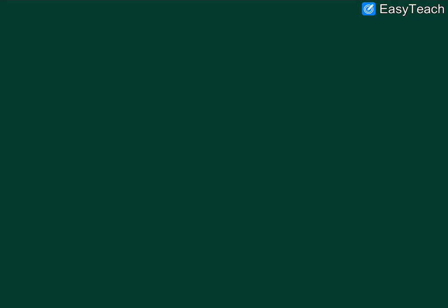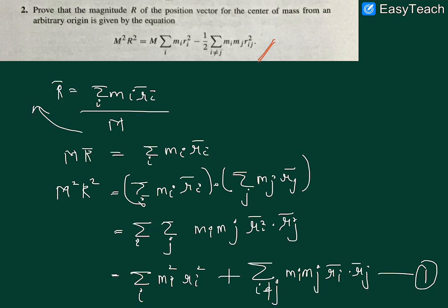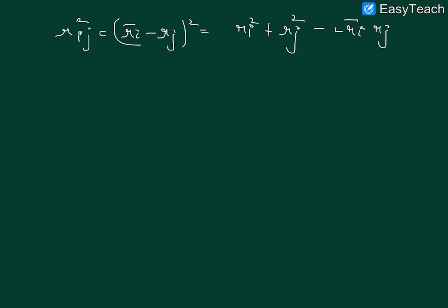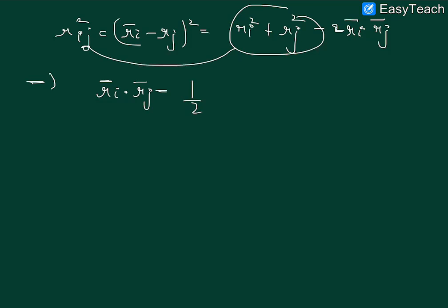By the definition of R_ij, we have R_ij² = (r_i − r_j)², which expands to r_i² + r_j² − 2 r_i · r_j. Rearranging, the dot product r_i · r_j equals half of (r_i² + r_j² − R_ij²). This expression will now be substituted back.